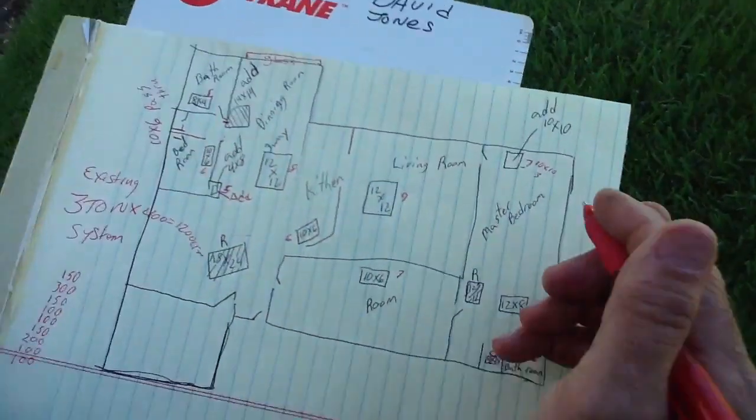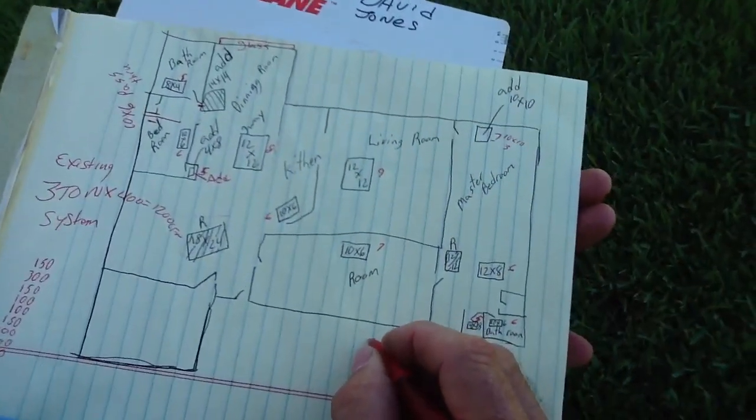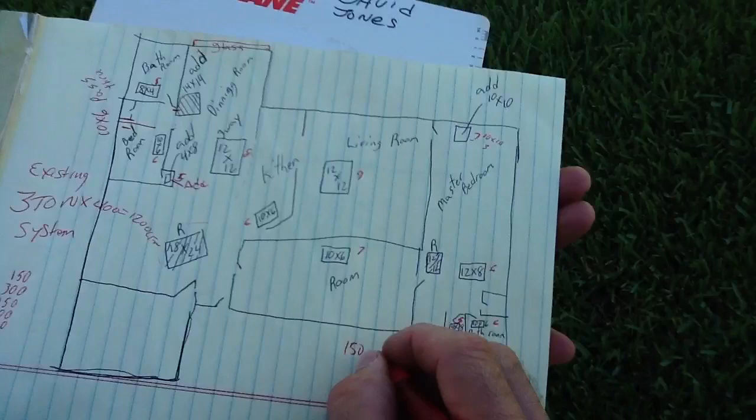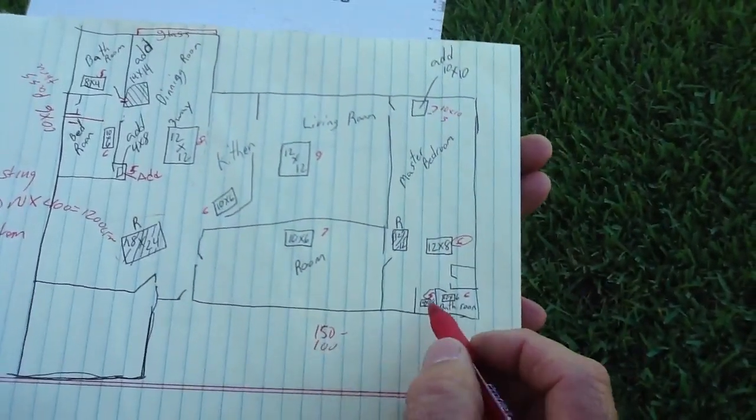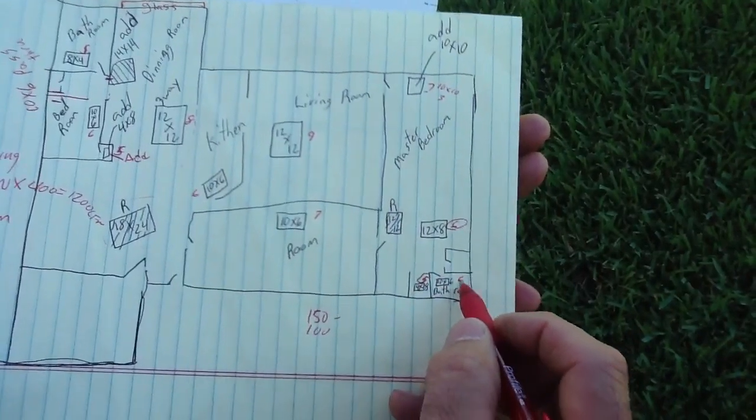So let's talk about this: seven-inch is 150 CFMs, six-inch is 100, five-inch is 50, so that's another 150. That's 300, that's 400 CFMs.